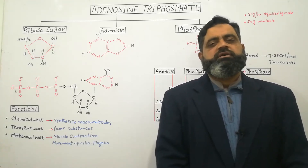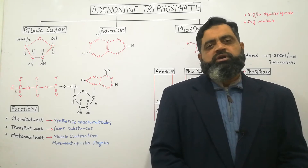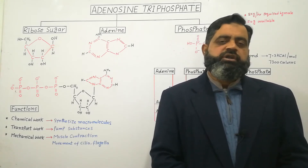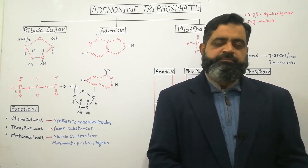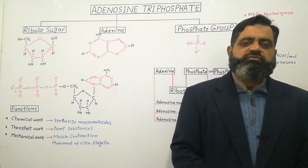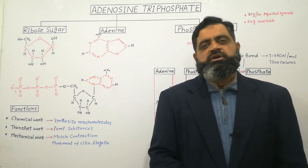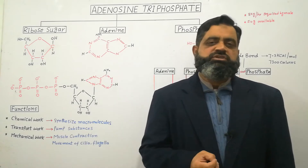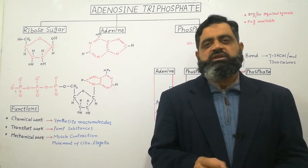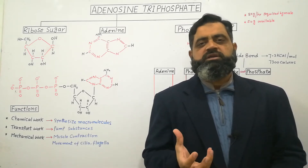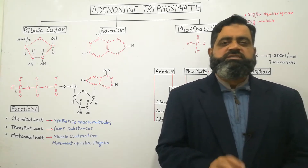Hello to all students. I am Professor Masood Fuzal. Today we are going to discuss the structure and function of ATP, adenosine triphosphate. Adenosine triphosphate is also known as the energy currency for the cell, because to gain energy our cells spend ATP molecules — just like we spend currency to buy things. So let's first discuss their structure.